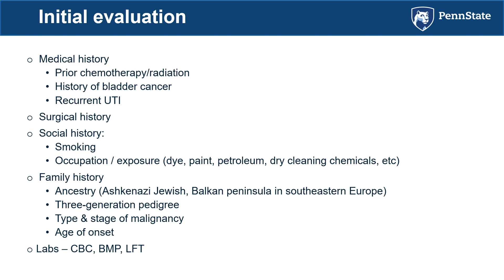A good family history involves ancestry — this patient has Ashkenazi Jewish ancestry. Are they from the Balkan peninsula where they may be exposed to Balkan nephropathy? Obtain a three-generation pedigree covering not just the patient but parents, grandparents, children, aunts, and uncles — noting not just urologic cancers but all cancer types, stage at diagnosis, age of onset, and whether they died from disease. Early age of onset and multiple cancers on one side of the family are hallmarks of hereditary cancer syndrome. Labs include CBC, BMP to assess renal function, and LFTs.